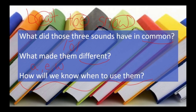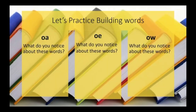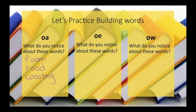Determining how we'll know when to use them can be pretty tricky. So we're going to look at the next page and work on some different words that have these sounds. Let's start by looking at some words that have OA in them. Some examples would be words like foam, road, coasting, and bloat.